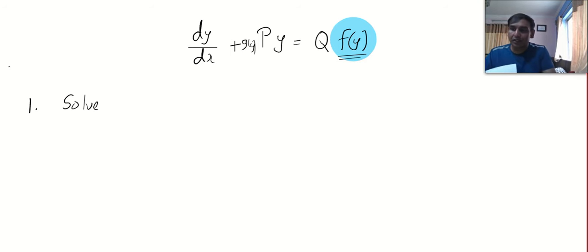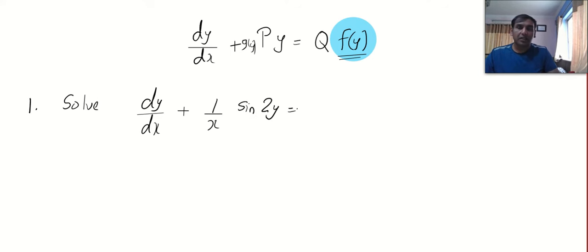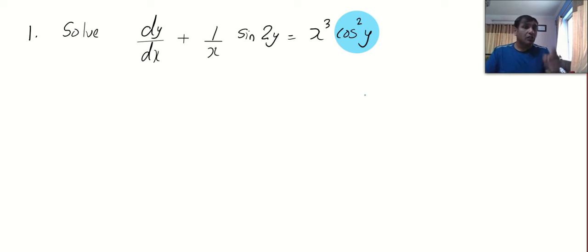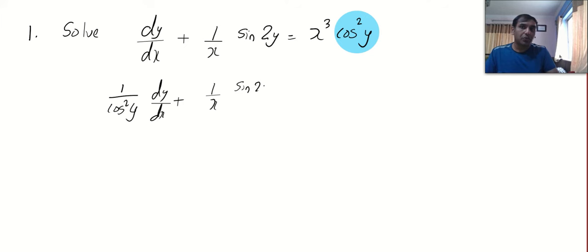This question was asked in 2075. Solve the differential equation: dy/dx + (1/x)·sin 2y = x³·cos²y. Just like I told you, it looks kind of like our linear equation, but focus on the right-hand side — you will see a function in y. Point number one: you have to remove the function in y from the right-hand side. That's very simple — divide throughout by cos²y. So we get (1/cos²y)·dy/dx + (1/x)·sin 2y / cos²y = x³.